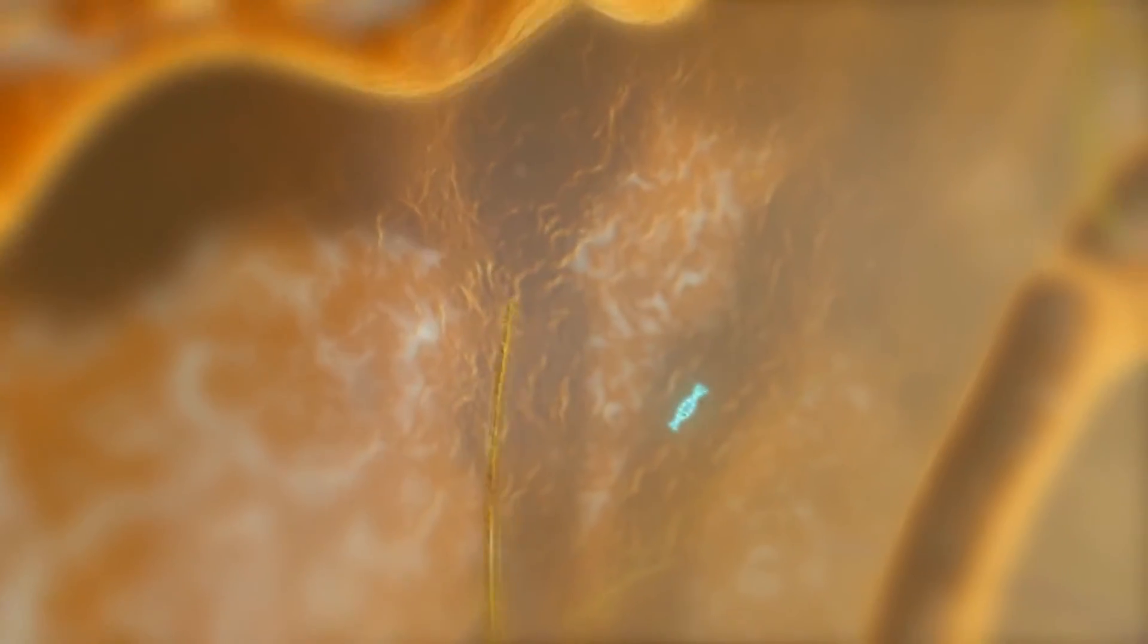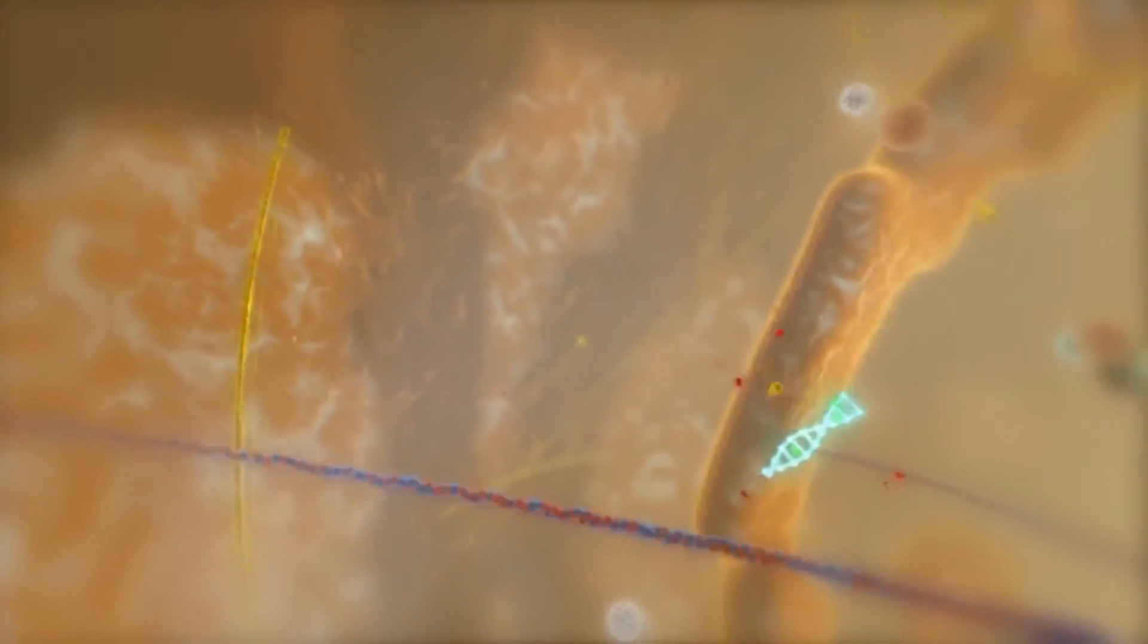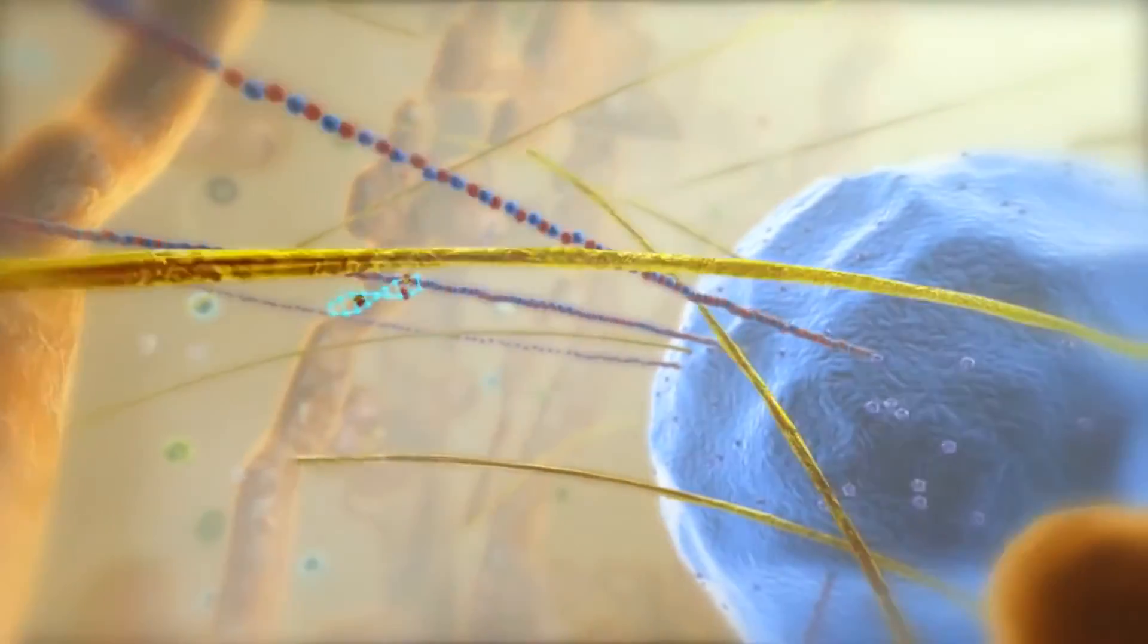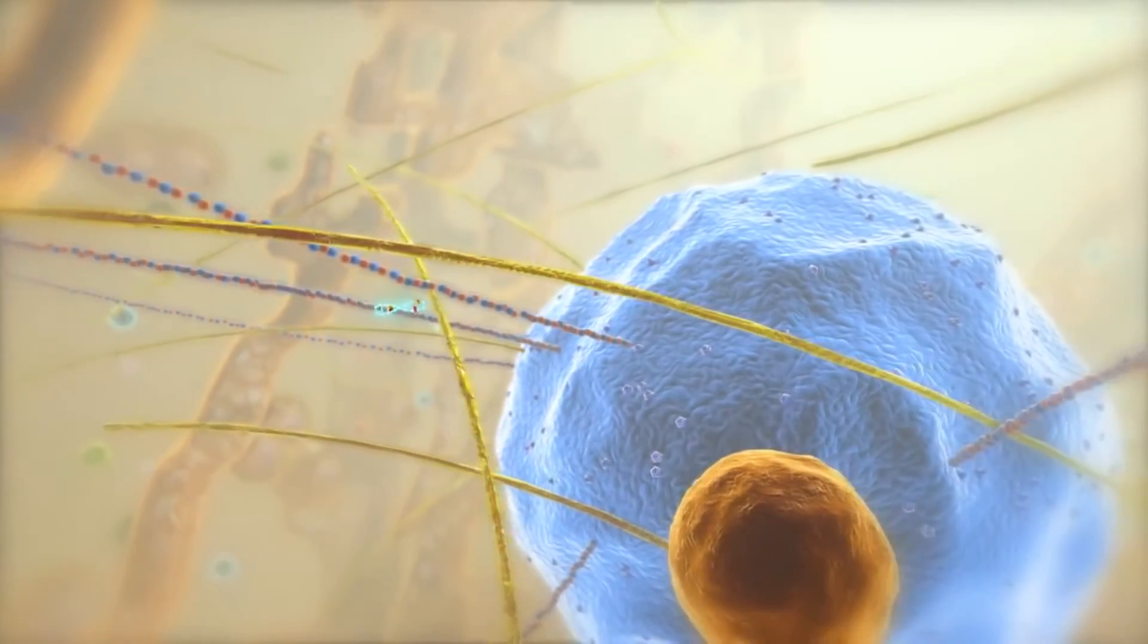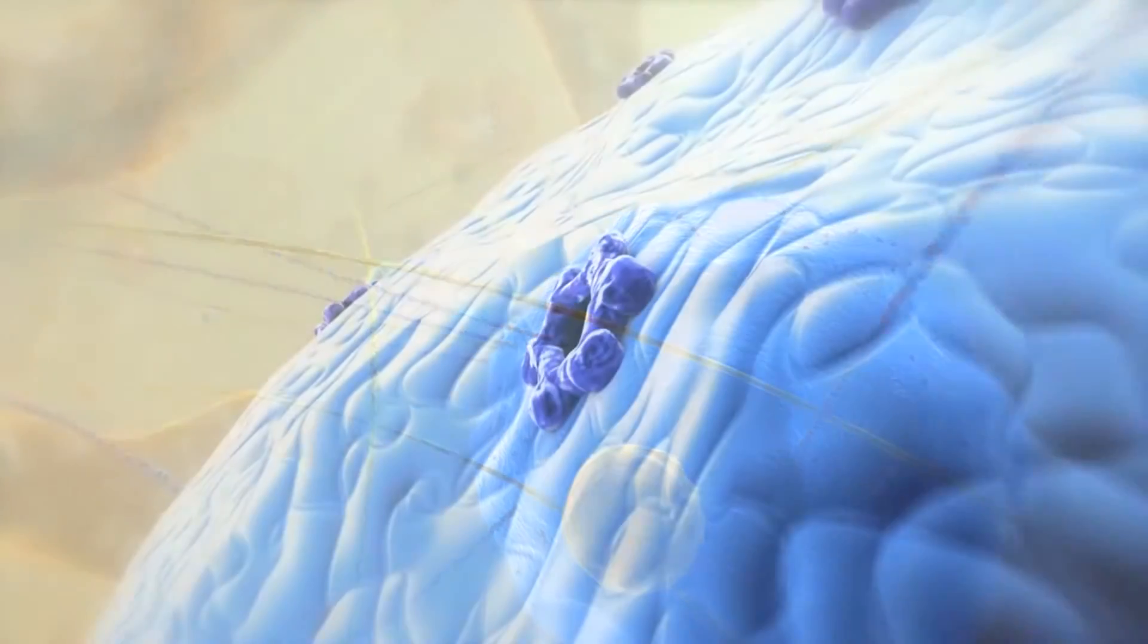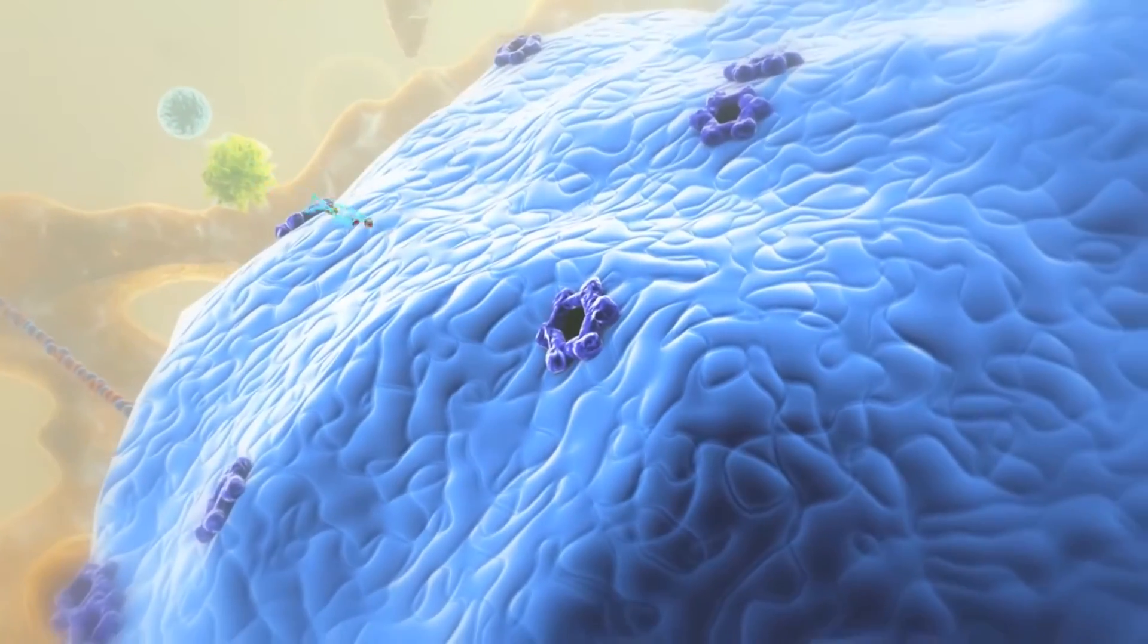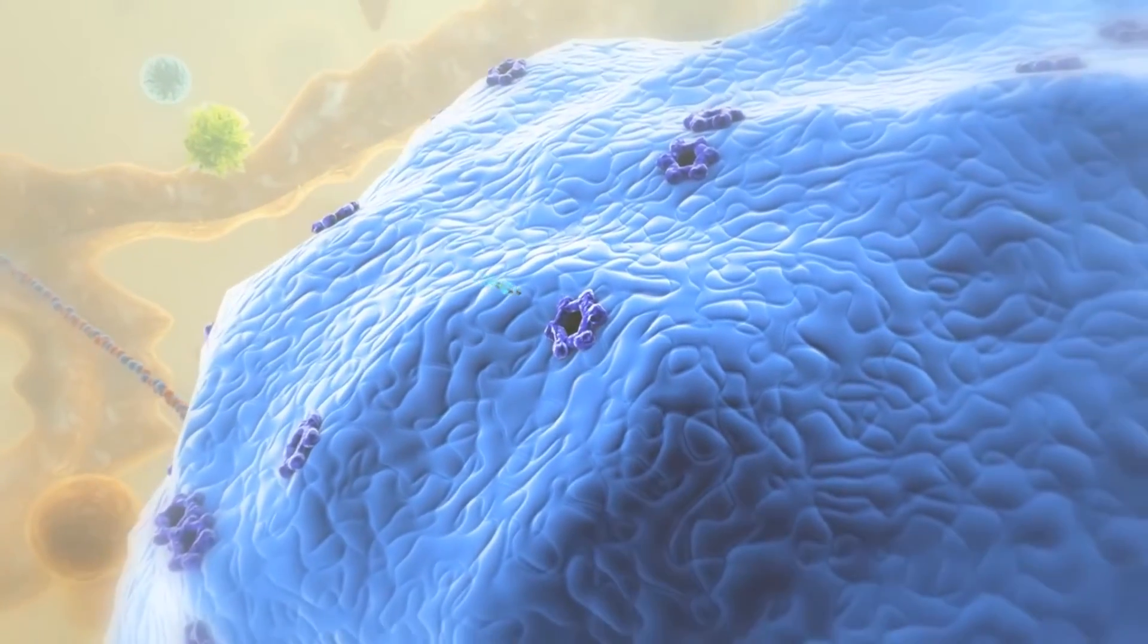an exposed peptide flag recruits endogenous proteins to transport the DNA into the nucleus via the nuclear pores—small gated channels in the nuclear envelope that are normally closed for large DNA molecules. Once the DNA is in the nucleus,